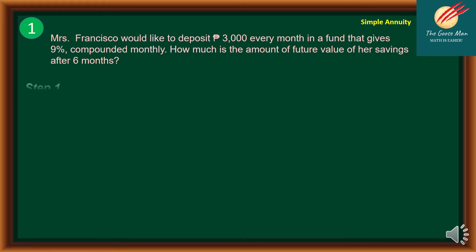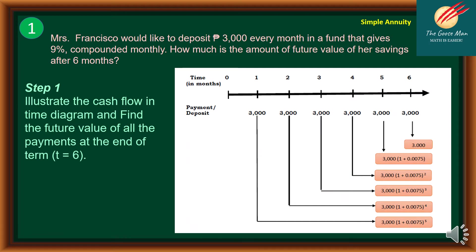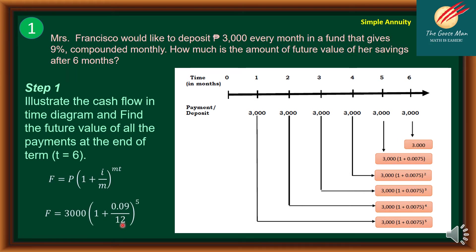Step one is to illustrate the cash flow in the time diagram and find the future value of all payments at the end of the term, T = 6. Observe that the last payment does not earn interest, so its exponent is 0, giving simply 3,000. The payment at month 5 earns interest for one period, so its exponent is 1. The formula used is 3,000 times (1 + 0.09/12) raised to the appropriate power.